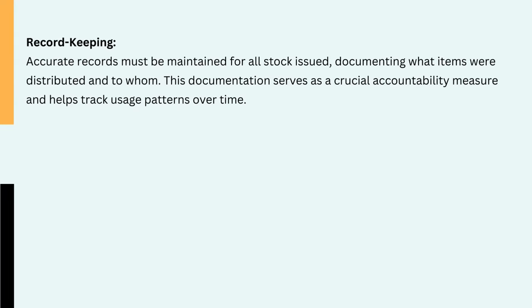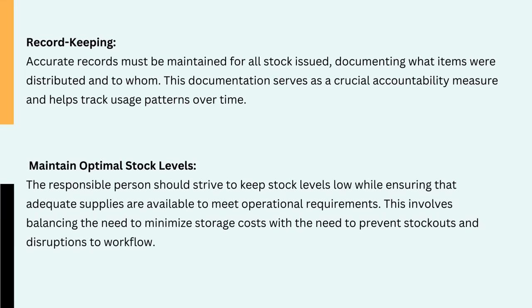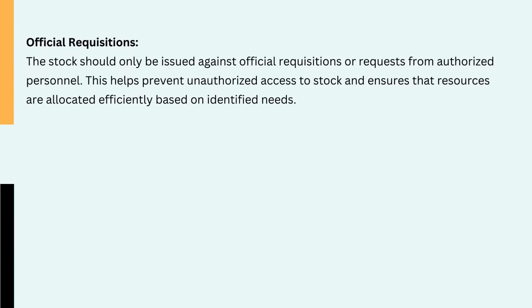4. Record-keeping. Accurate records must be maintained for all stock issued, documenting what items were distributed and to whom. This documentation serves as a crucial accountability measure and helps track usage patterns over time. 5. Maintain optimal stock levels. The responsible person should strive to keep stock levels low while ensuring that adequate supplies are available to meet operational requirements. This involves balancing the need to minimise storage costs with the need to prevent stockouts and disruptions to workflow.